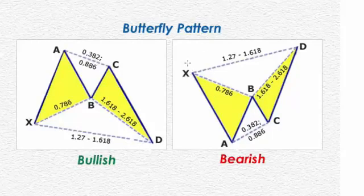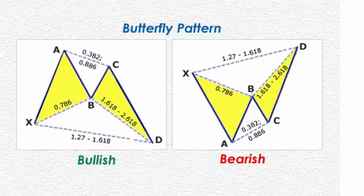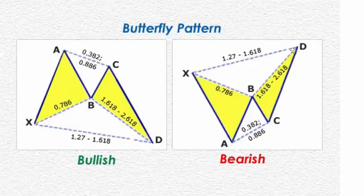The butterfly pattern is also an X, A, B, C, D pattern. The difference with this pattern, as opposed to the other ones we had looked at, is that X to A has a retracement to B, and it's a deep retracement up of 78.6% of the prior swing down. From B down to C, the market goes between a 38 and 88% retracement. And then that next drive up is where the market gets to that extension level — B, C extends to D; X, A extends to D. Important to look at the 1.272 to 1.618.